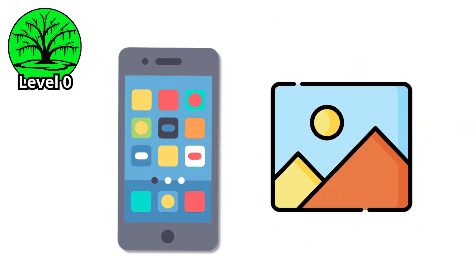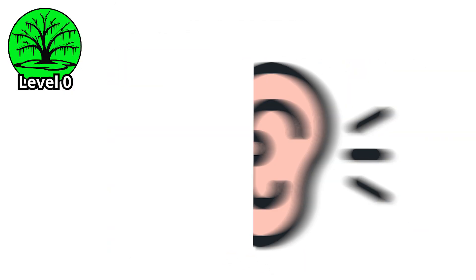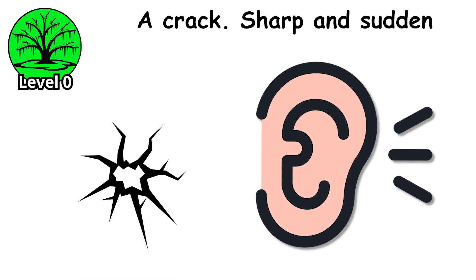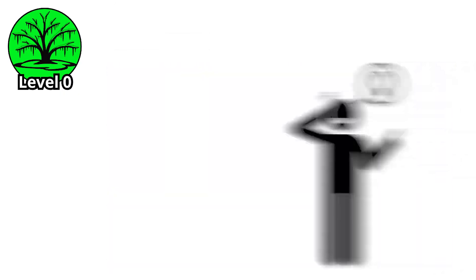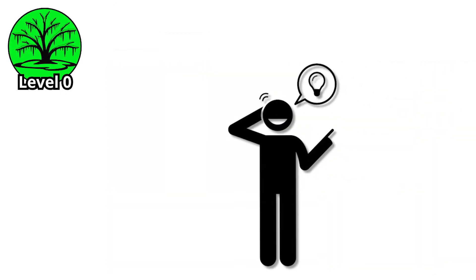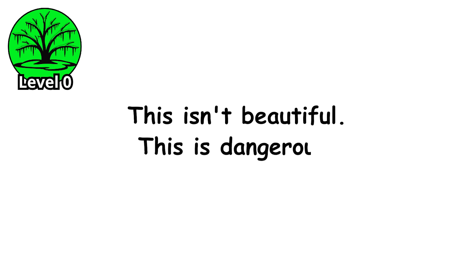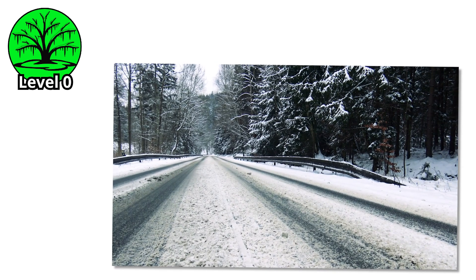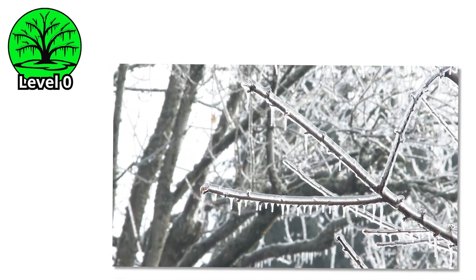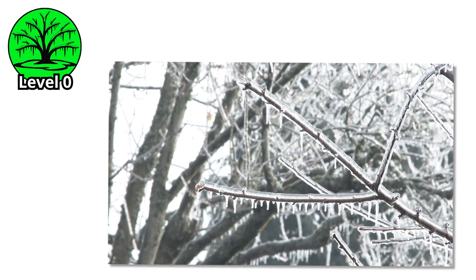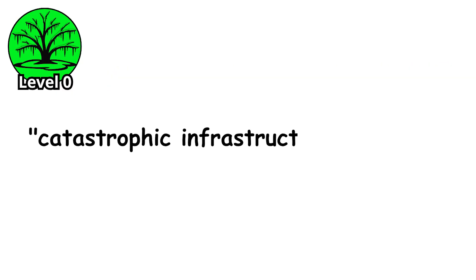You grab your phone to take a picture for Instagram. Then you hear it. A crack. Sharp and sudden. A tree branch weighted down by ice snaps clean off and crashes onto your neighbor's fence. That's when you realize this isn't beautiful. This is dangerous. What you're witnessing is an ice storm, and you're standing at the very beginning of a scale that goes from minor inconvenience to catastrophic infrastructure collapse.